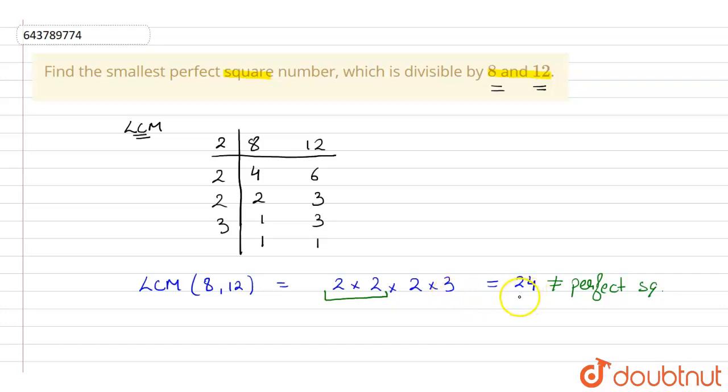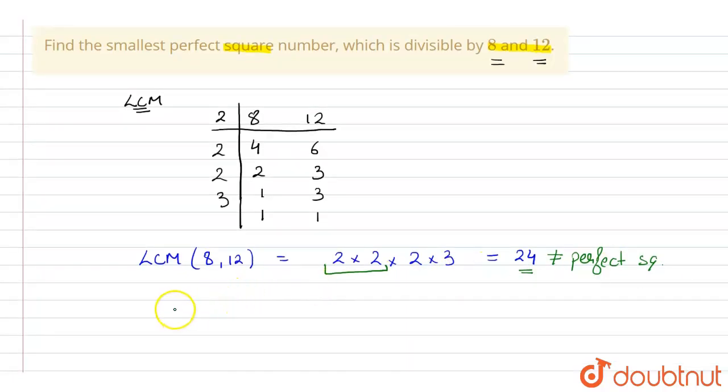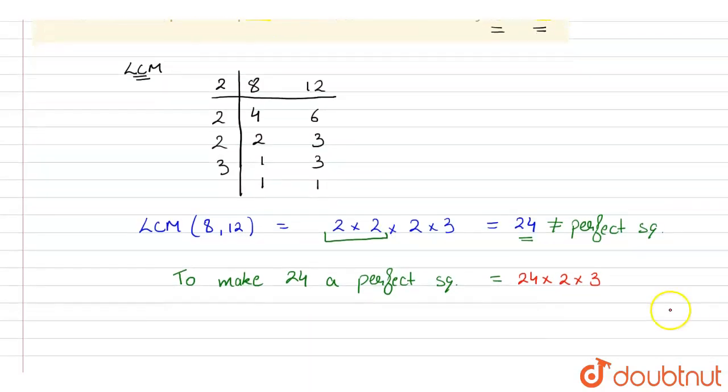So what we will do is we will multiply this 24 by 2 and 3 so that it becomes a perfect square number. To make 24 a perfect square, this will be equal to 24 into 2 into 3.